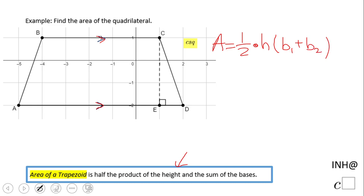Okay, so how much are these in our picture? The height is this dashed line, and we can count: one, two, three. The first base—I'm going to call it the small base—is this one. How much is that? One, two, three, four, five.